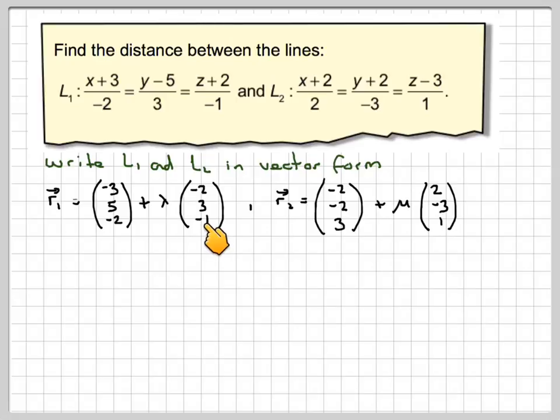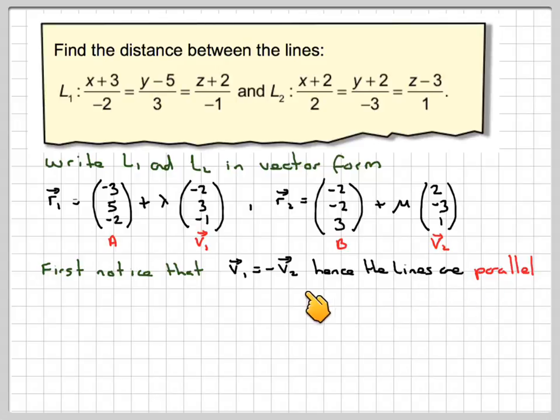First thing we notice is that this directional vector is actually a multiple of this directional vector. V1 is actually equal to minus V2. What does that actually mean? It means that the two lines are actually parallel, or in fact it could be the same line. But checking some points, you'll soon realize that they are parallel.